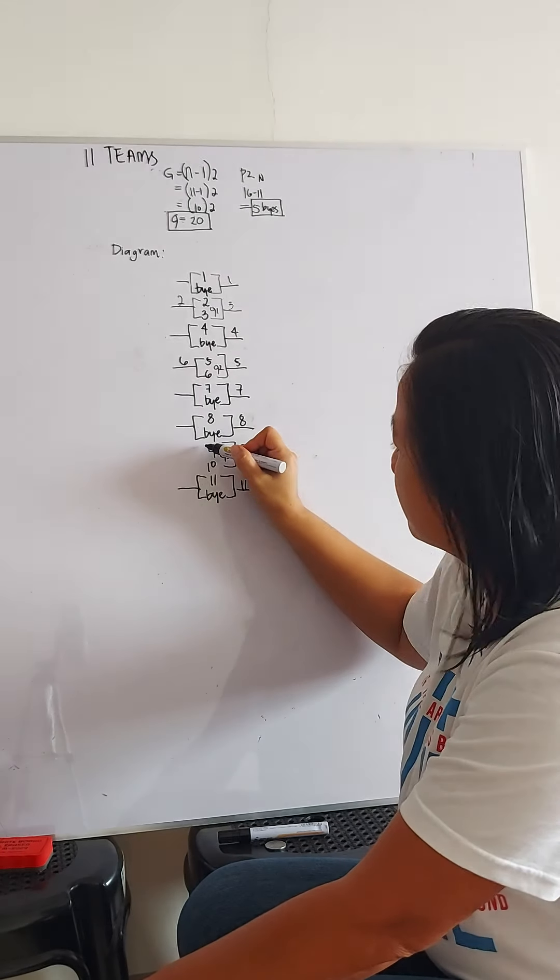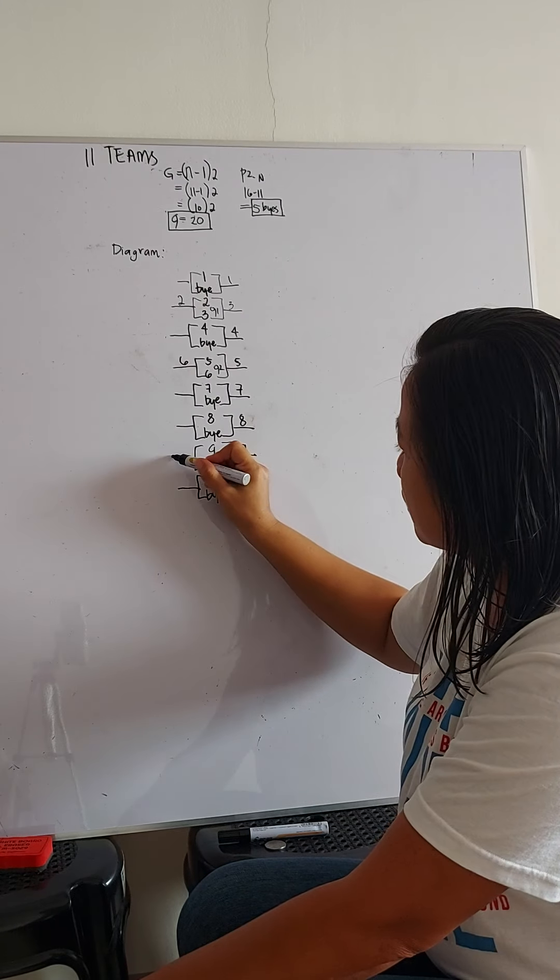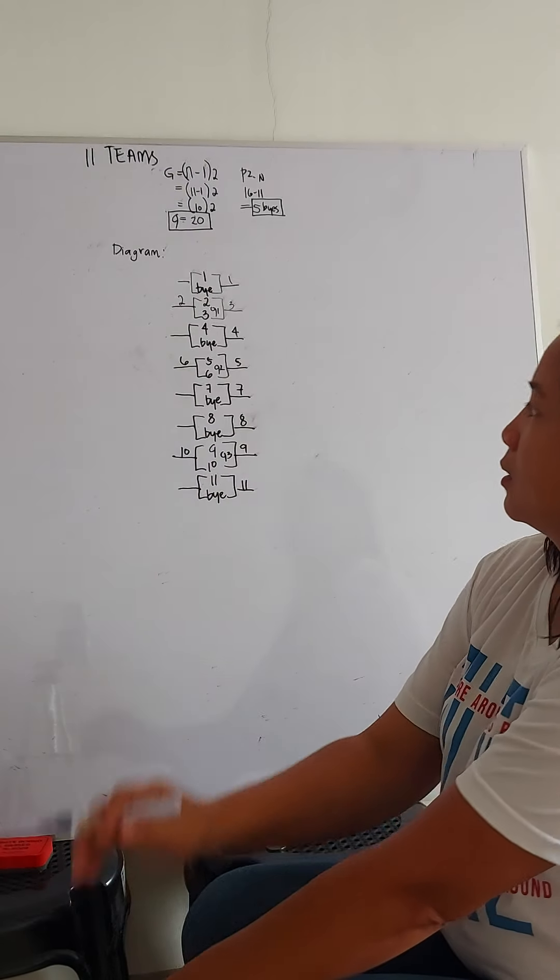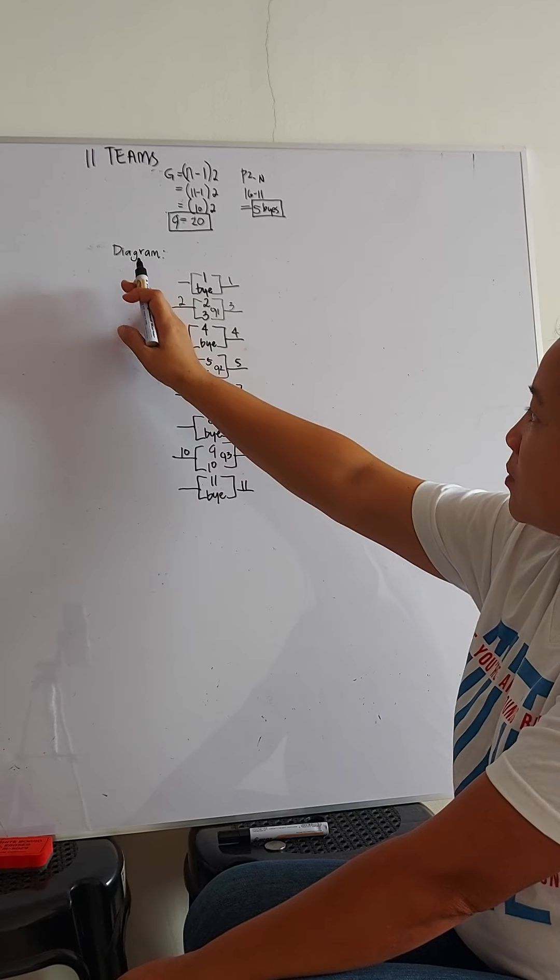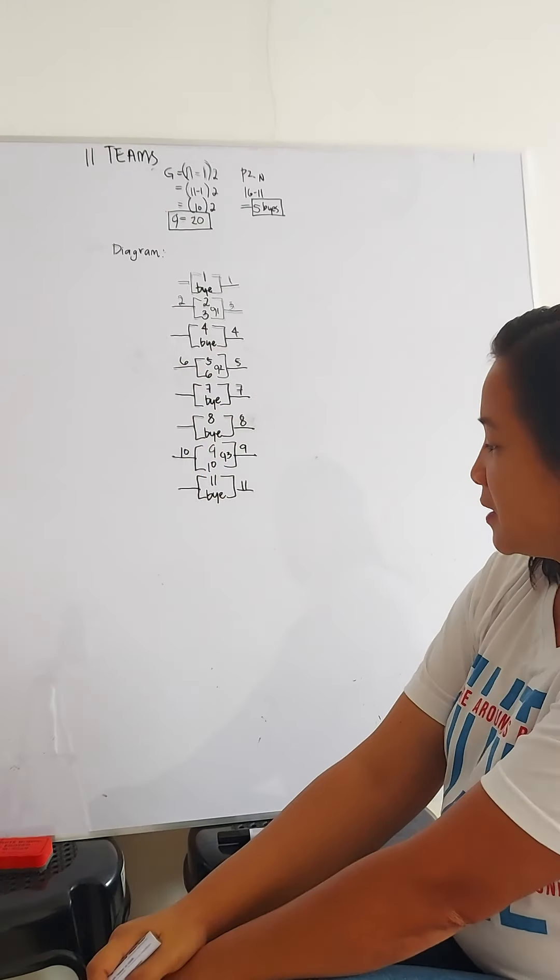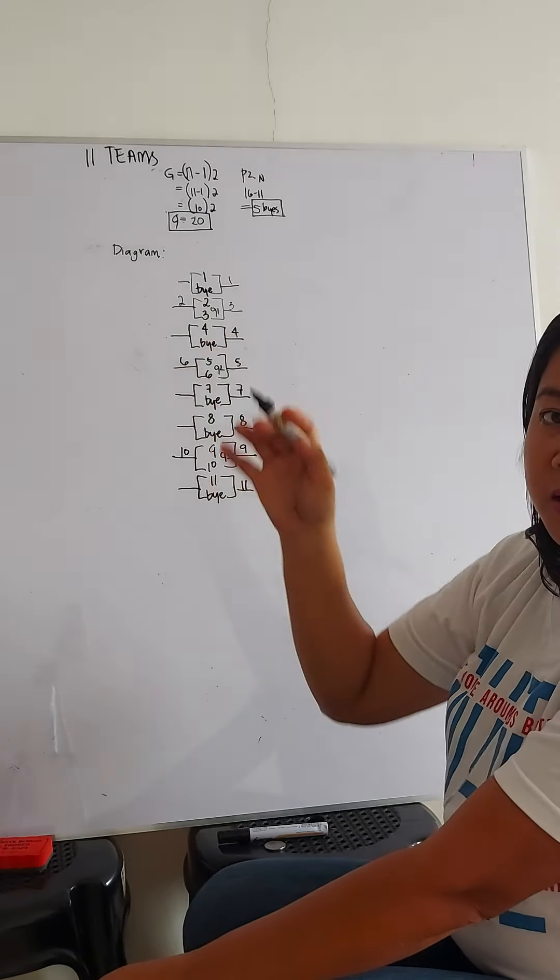Game 2, game 3, so as you can see, we have losers here, team 2, 6 and team 10. Now, let's close the bracket.